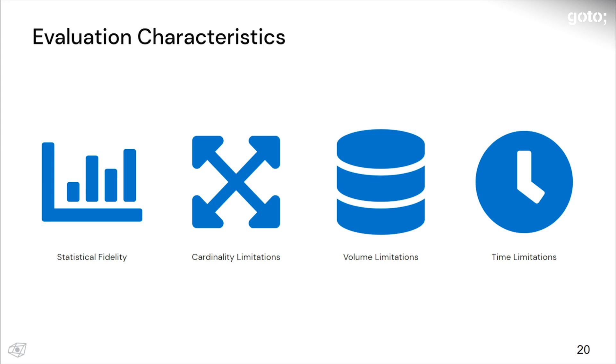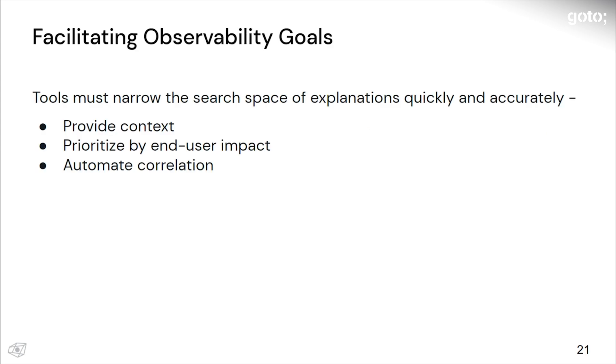You need to take these four things into account when evaluating a tool, and those tools should help you narrow the search space of your explanations. You want things that can provide context, because most problems aren't caused by one failure. You need something that will help you prioritize your work by the impact to your end users, rather than by whatever arbitrary or capricious thing you might have already done. Finally, you need something that will help you automate correlation. What I mean by automate correlation is: a distributed system is going to be significantly larger and have a lot more different moving parts. If I have some big Kubernetes application with thousands or tens of thousands of nodes, I need to be able to figure out what's important and what's not important. I don't want to dig through that and find that needle in that haystack by myself—I want my tools to do it for me.